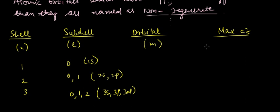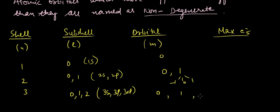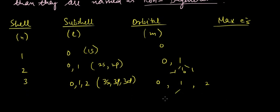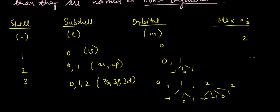For orbitals: when l=0, m=0; when l=1, m can be -1, 0, and 1; when l=2, m ranges from -2 to 2. Maximum electrons per shell follow 2n²: for n=1 it's 2, for n=2 it's 8, for n=3 it's 18.